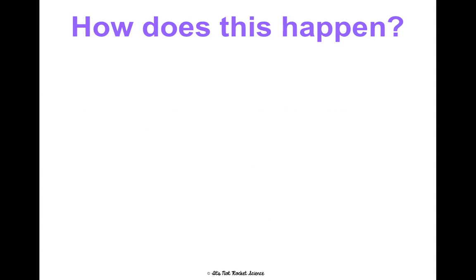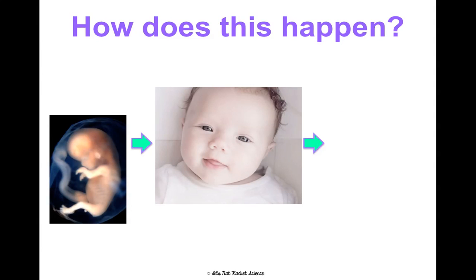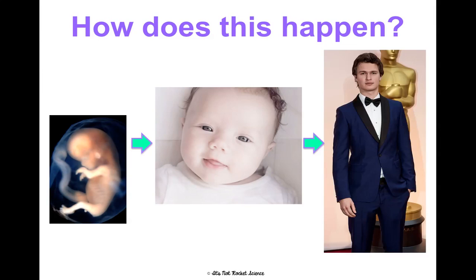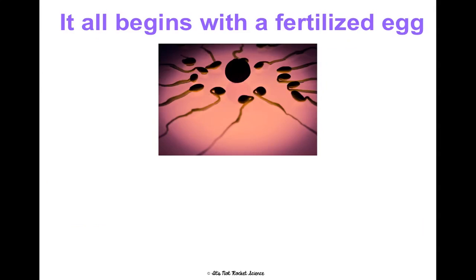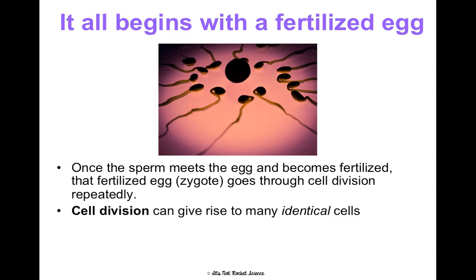To give you some context for what we're talking about — how does this happen? How do we go from this, to this, to this? I mean, that's a miracle when you look at these pictures. So we're going to be talking about how this goes down. It all begins with a fertilized egg. Once the sperm meets the egg and becomes fertilized, we call that fertilized egg a zygote. That zygote goes through cell division repeatedly, copying itself over and over again.